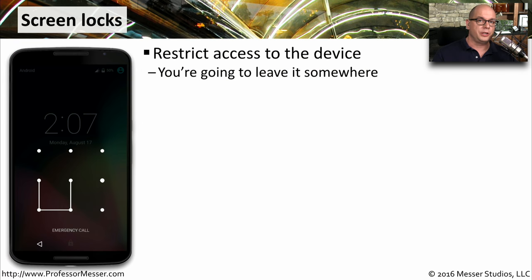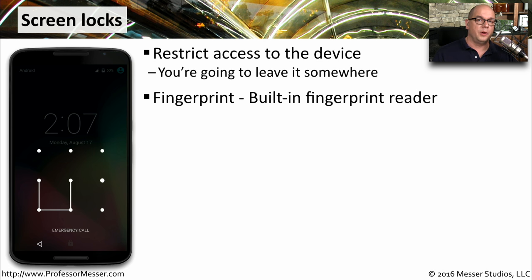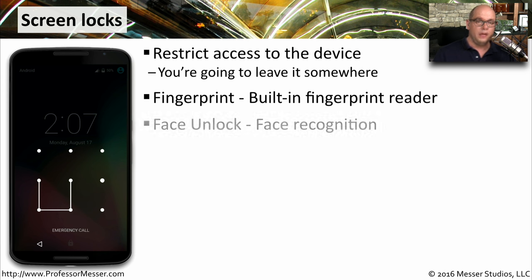One of the most fundamental security features on your mobile device is the screen lock. With the screen lock, your system is secure until you unlock it through a number of different means. One way to unlock your mobile device is through a fingerprint reader that's built into the device itself. You put your finger on the device, it recognizes your fingerprint, and unlocks the system.